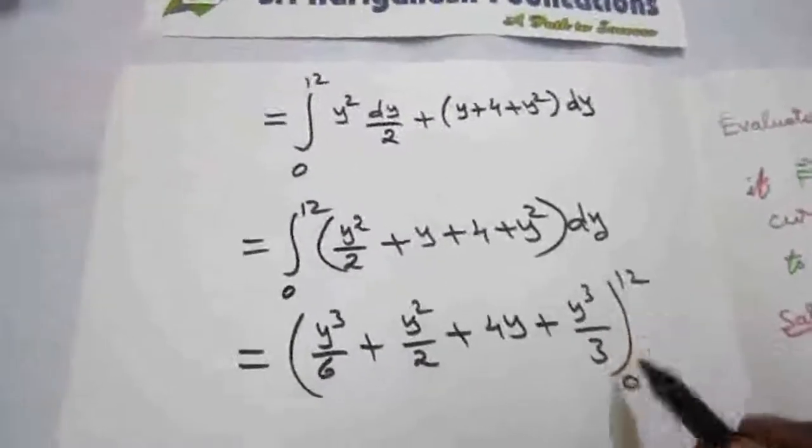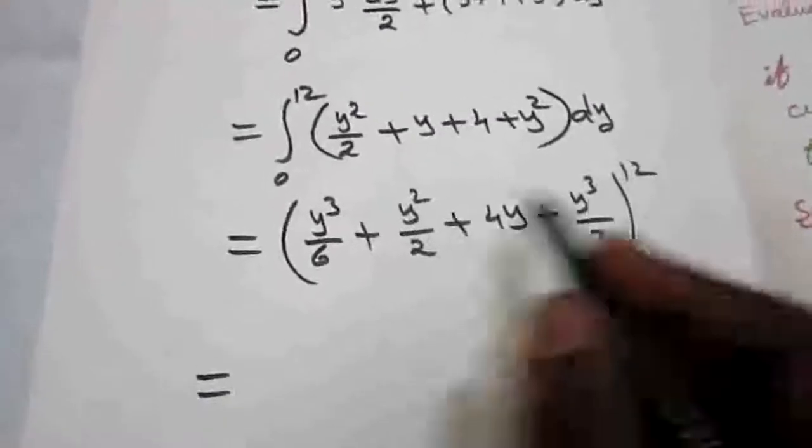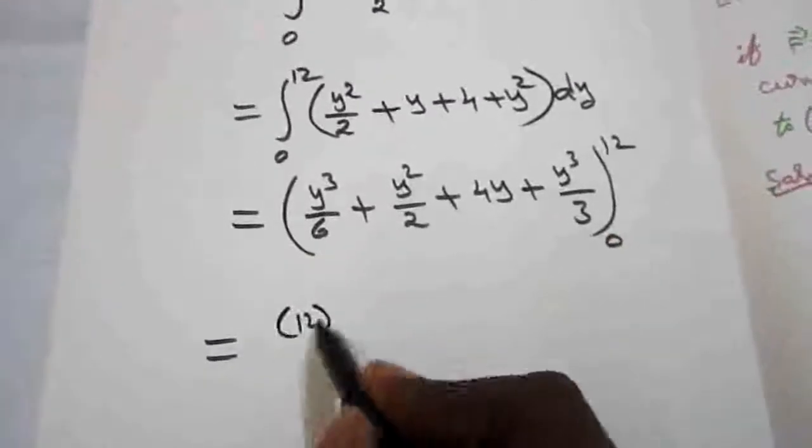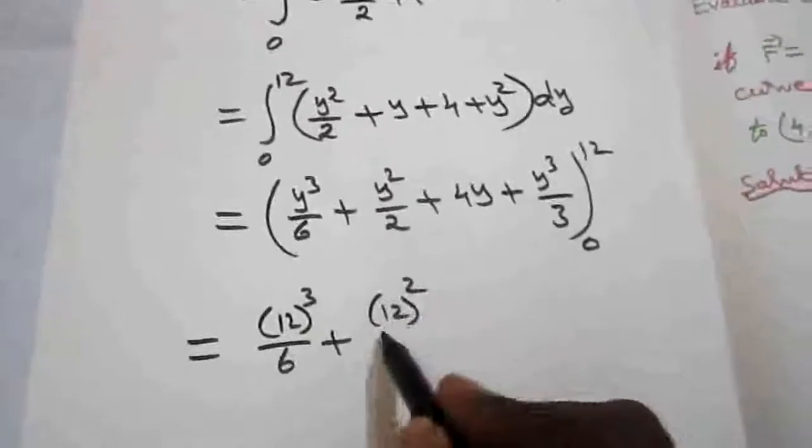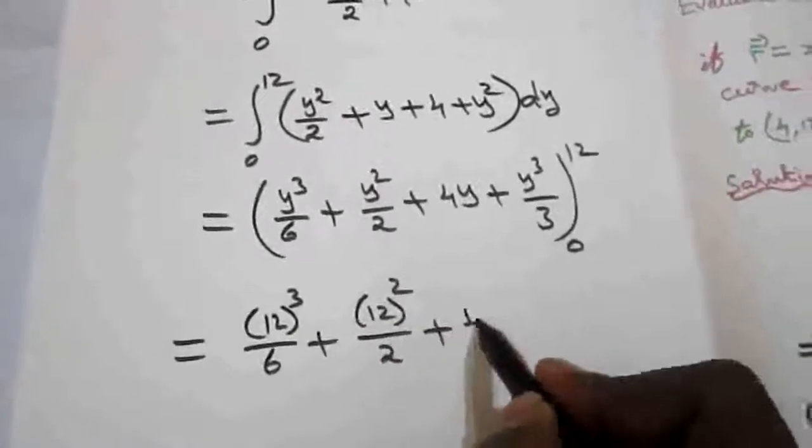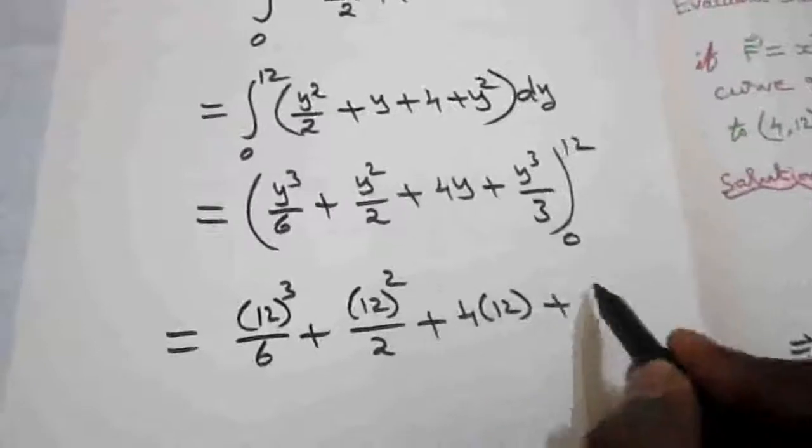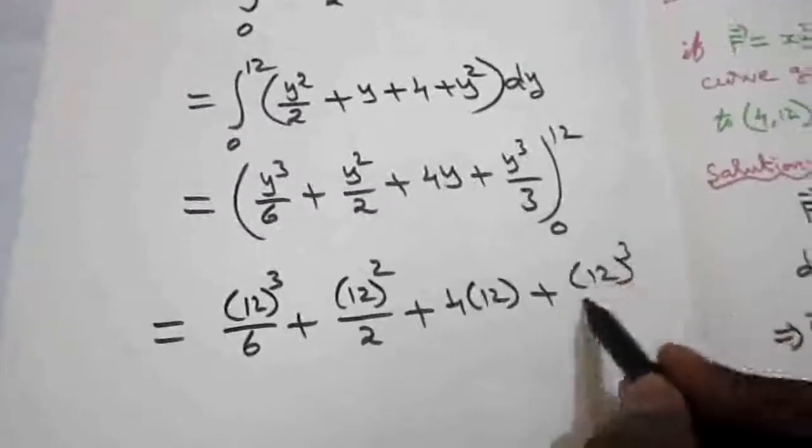Upper limit 12, lower limit 0. So now substituting upper limit: 12³/6 + 12²/2 + 4(12) + 12³/3.